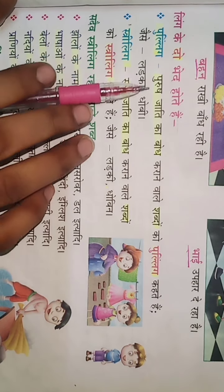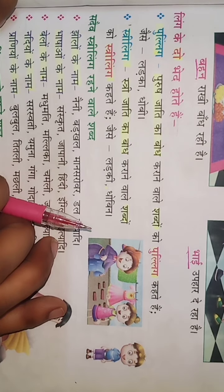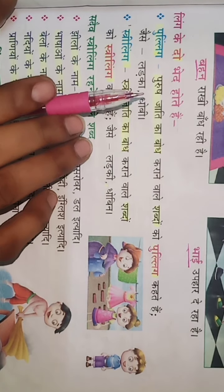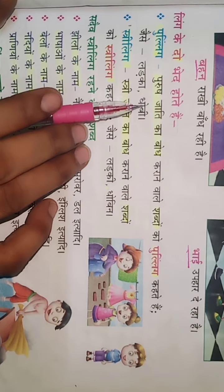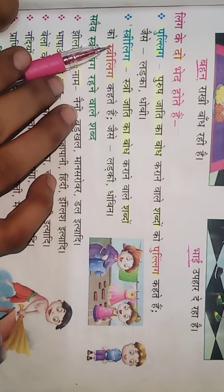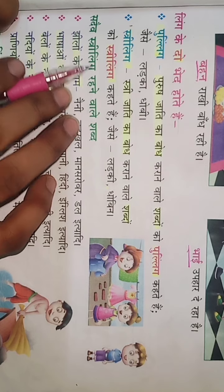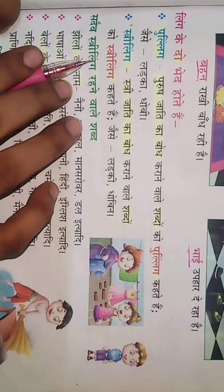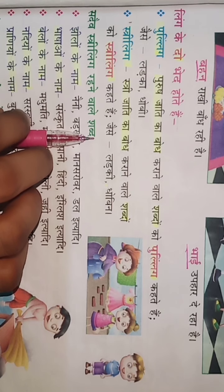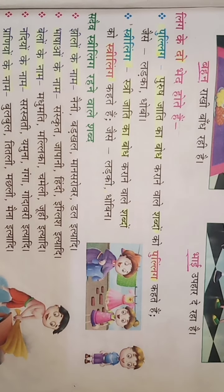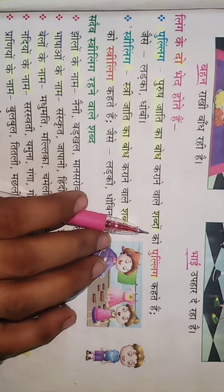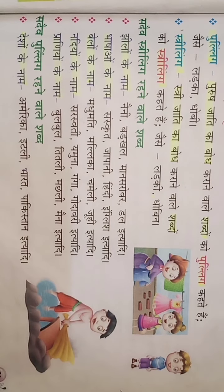So now I will tell you about Pulling. Istri jati ka bodh karane waali shabdon ko Istri Ling kehte hain, jaise larki, dho, bhin. Yarni jin shabdon se yeh pata chal raha hai ki yeh Istri Ling hai, unhe hum Istri Ling kehte hain. Jis shabd se hume purush jati ka pata chale voh Pulling kehlata hai, or jis shabd se istri jati ka pata chale voh Istri Ling kehlata hai.